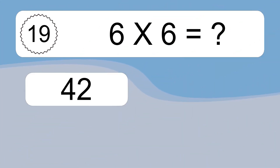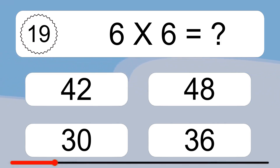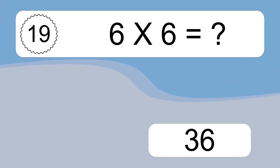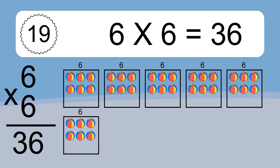6 times 6 equals what? 6 times 6 equals 36. We have 6 boxes, and each box has 6 colorful balls inside. If you count all the balls in all the boxes together, you will have 6 times 6 balls. This equals 36 balls.